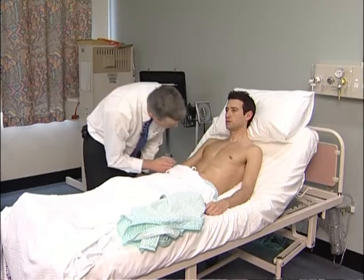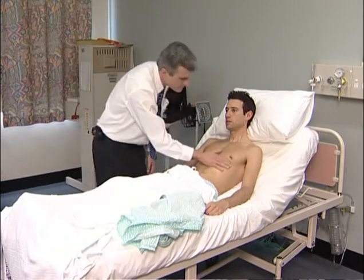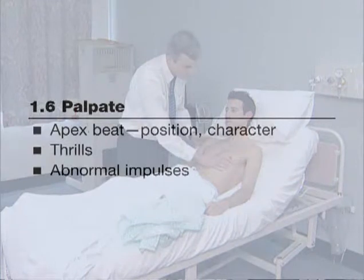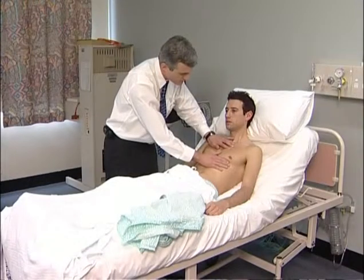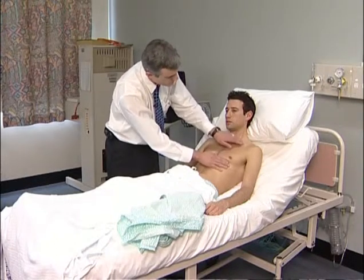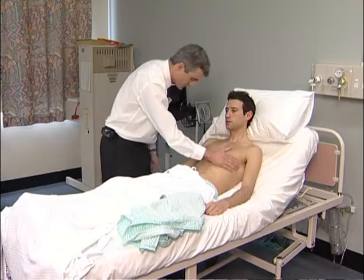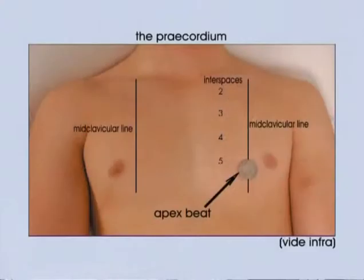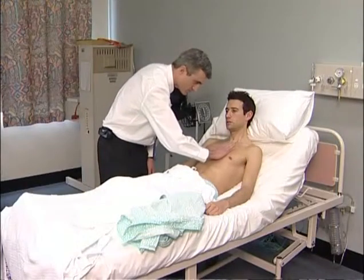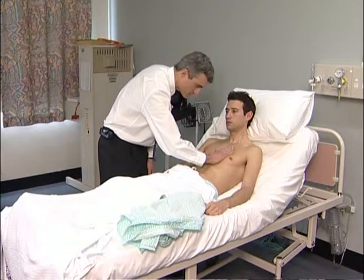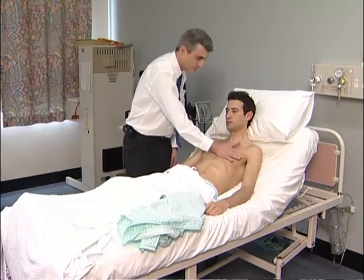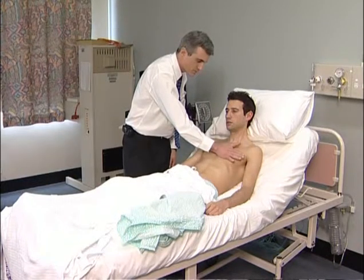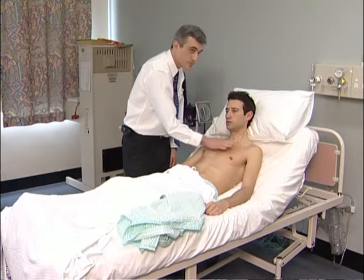The examiner now begins palpation of the chest, usually starting with an attempt to feel the apex beat. Establish its position — where it is in relation to the midclavicular line and which interspace it is in — and make an assessment of its character. It is worth spending some time on this important part of the examination. Palpation to the left of the sternum is performed to feel for a parasternal impulse. The hand then feels over towards the apex and at the base of the heart for the presence of a thrill, which is a palpable murmur.